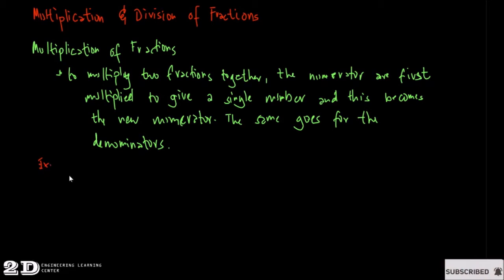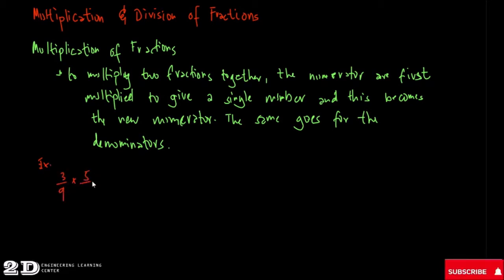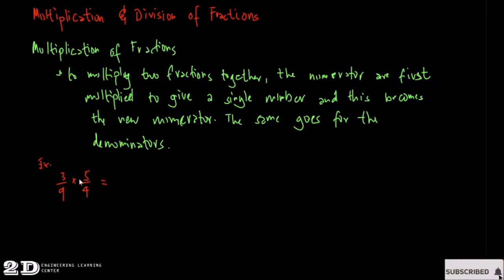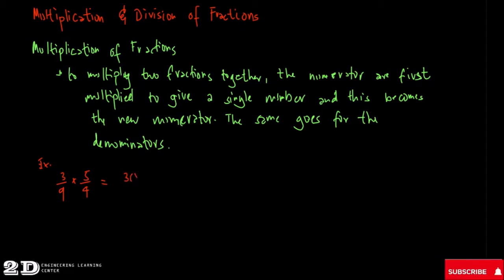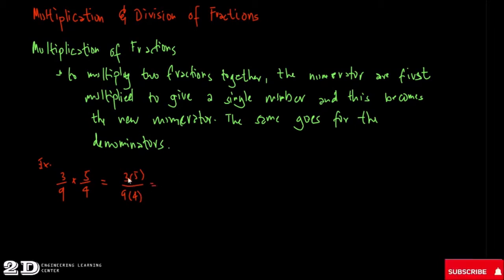For example, we have 3/9 times 5/4. Using the process, we first multiply the numerators, so that will be 3 times 5, over the denominator 9 times 4.